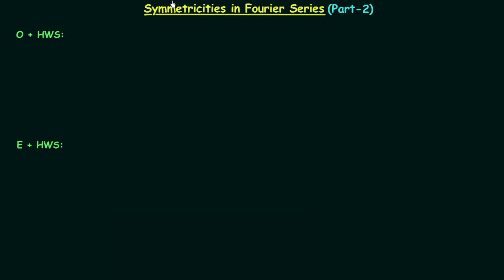In the first part of symmetricities in Fourier series, we completed three types of symmetries: even symmetry, odd symmetry, and half wave symmetry. Now in Part 2 we will complete the remaining three types of symmetries, and we will start with odd plus half wave symmetry.